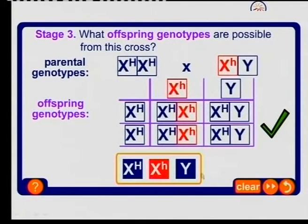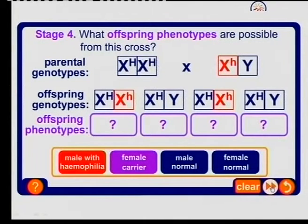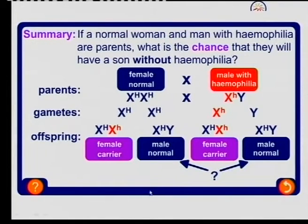In other words, a healthy woman and a hemophilic man will have healthy boys. Interestingly enough, healthy boys, but the girls will all be carriers. There you see it - we will have carrier girls and normal boys.